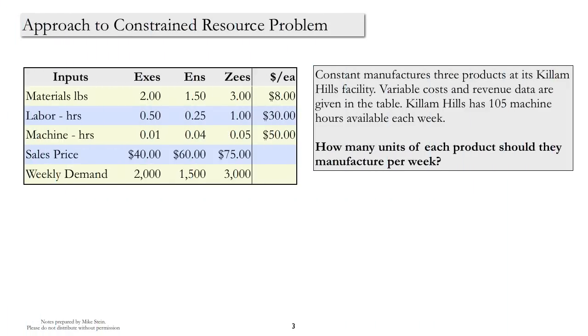Our first example looks at a constrained resource problem. The issue here is Constant Manufacturing makes three products: X's, N's, and Z's. Each product uses a machine. The machine has a limited availability during the week. So the question is, how much of each product should Constant make?